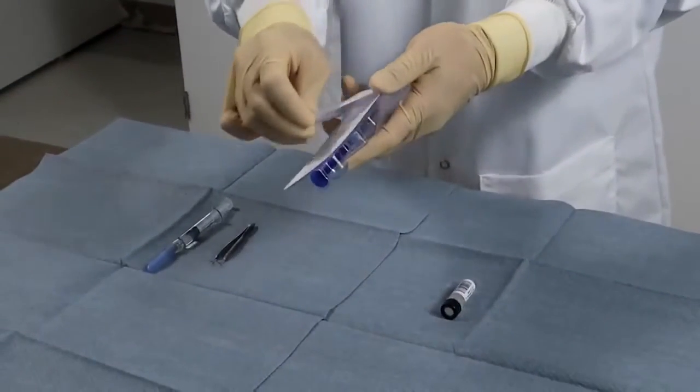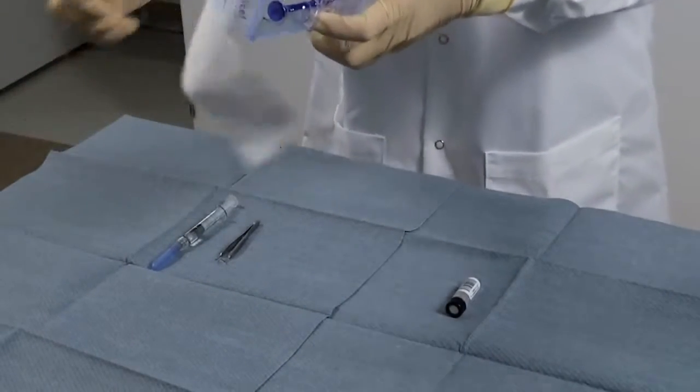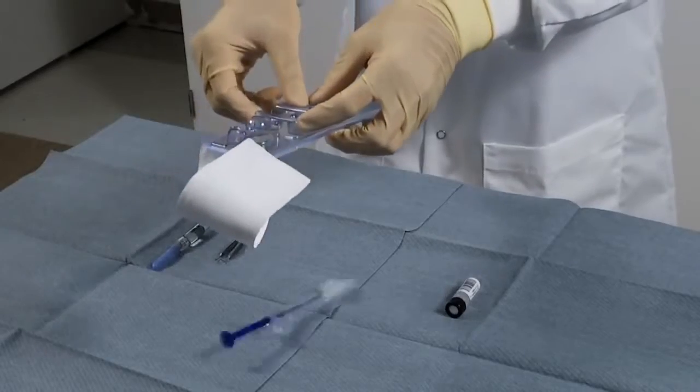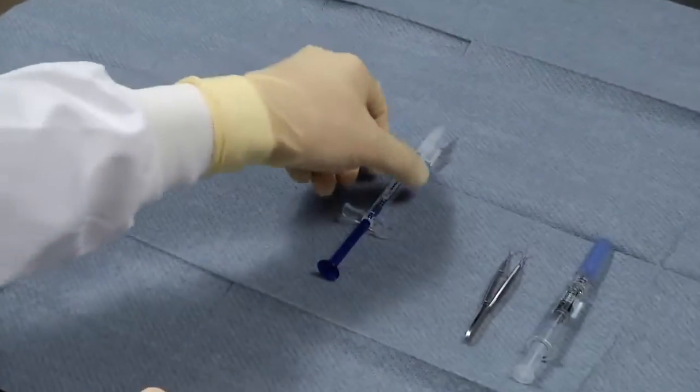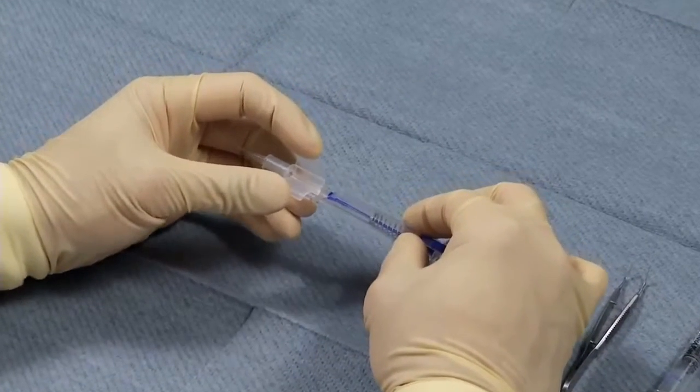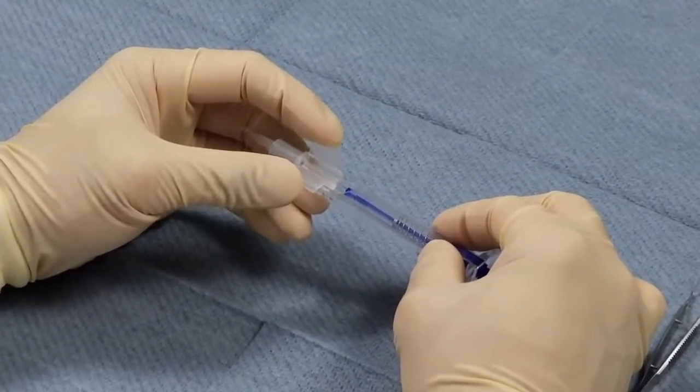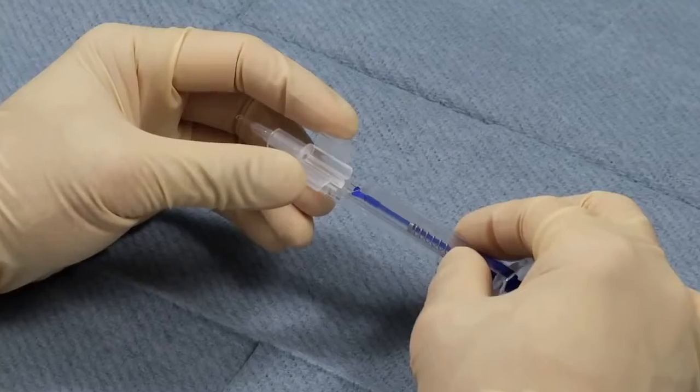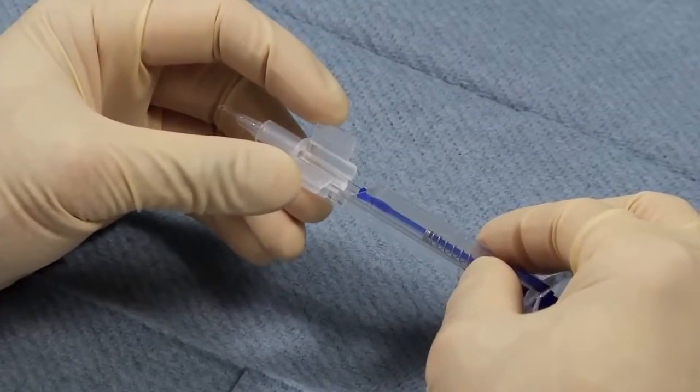First, open the injector blister tray and transfer the sterile injector onto the sterile field. Hold the injector in such a manner that the movable and fixed cartridge wings of the loading chamber can be guided with the index finger and thumb. Then, open the loading chamber.